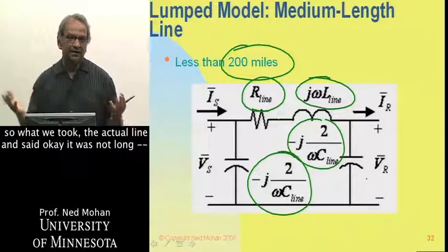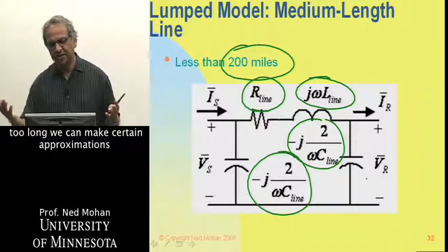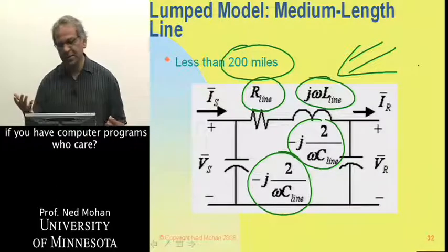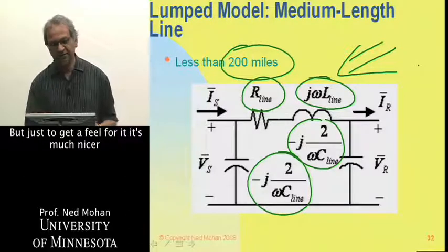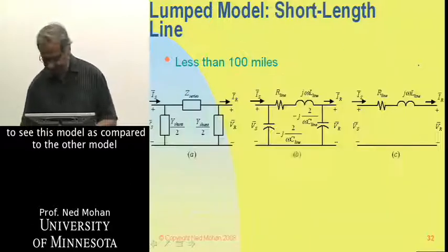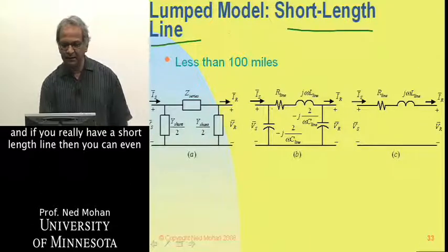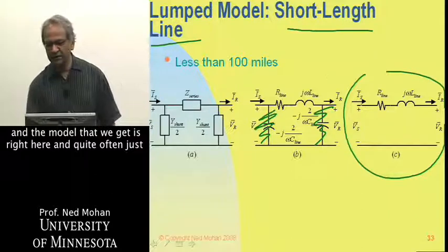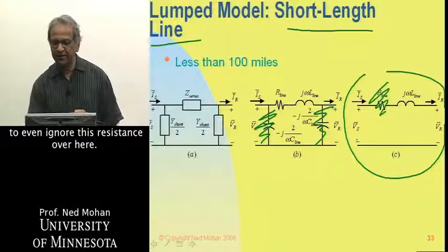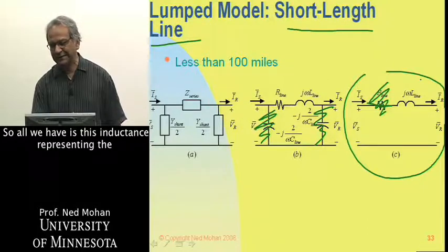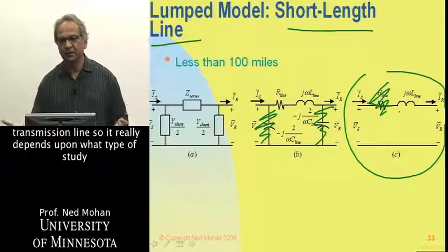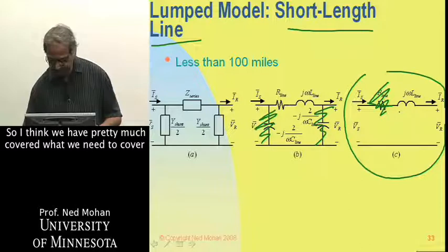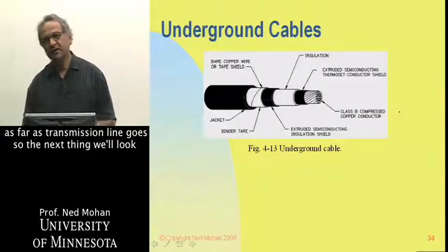So what we took, the actual line, and said, okay, if it's not too long, we can make certain approximations, and here is a much simpler model as compared to what we saw earlier. But if you have computer programs, who cares? But just to get a feel for it, it's much nicer to see this model as compared to the other model. And if you really have a short length line, then you can even ignore these capacitances in this medium length line, and the model that we get is right here. And quite often, just for stability analysis purposes and so forth, you may want to even ignore this resistance over here. So all we have is this inductance representing the transmission line. So it really depends upon what type of study that you're trying to conduct. So that's what it basically was down to.